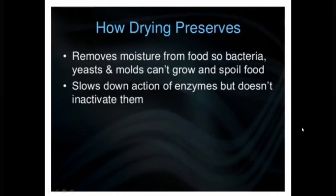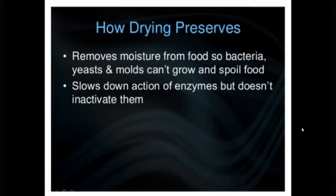In the drying process, it initially removes moisture from food so that bacteria, yeast, and molds cannot grow and spoil food. Whenever a food item is exposed to sun drying, bacteria, yeast, and molds will not form, so the food will be preserved. It also slows down the action of enzymes but doesn't inactivate them, meaning even dried food retains some enzymes needed to keep it healthy.